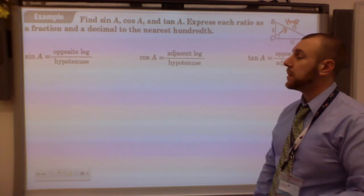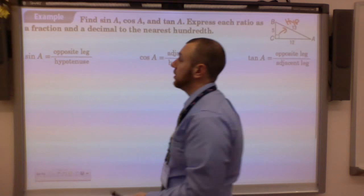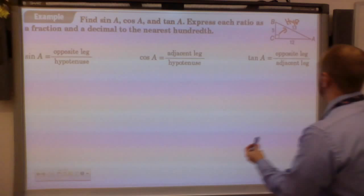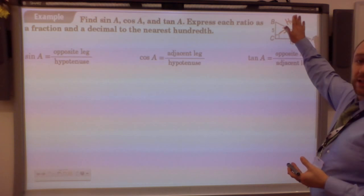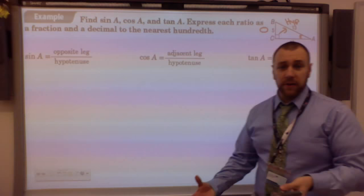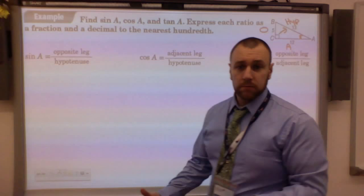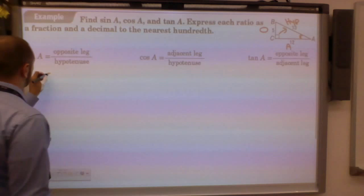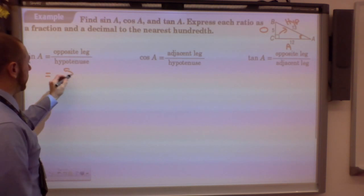I'm going to find the sine of angle A. A is a capital, so I'm talking about the angle. A is over here. The hypotenuse isn't going to change. The 5 is the opposite side and the 12 is my adjacent. So the sine of A is 5 over 13.